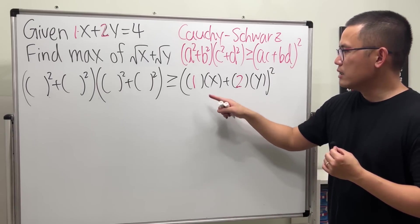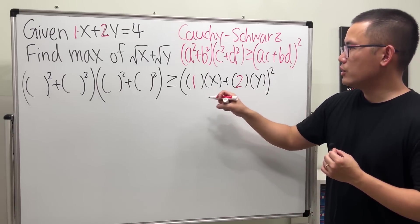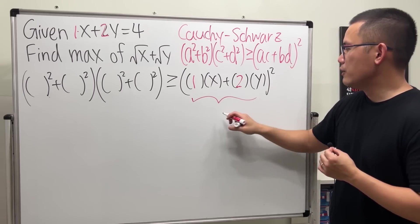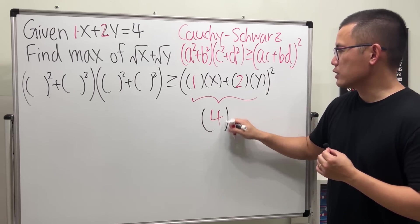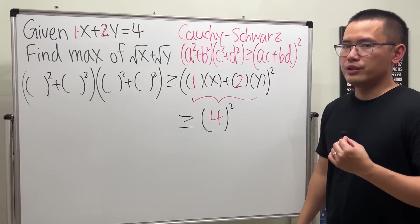And if we put this down, the inside here is just what we have, which we know. That will just be 4, and then we can square that. Okay, that looks pretty good.